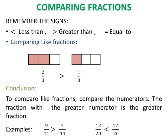Next example: Compare 12 by 20 and 17 by 20. The fraction 17 by 20 has a greater numerator, so 17 by 20 is the greater fraction. We put the less than sign between the two fractions. Thus, 12 by 20 is less than 17 by 20.